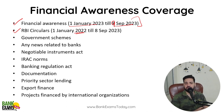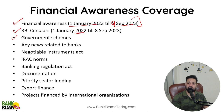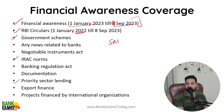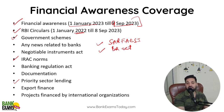Cover all government schemes: Sukanya Samriddhi Yojana, Kisan Credit Card, Jan Dhan Yojana, Vaya Vandana Yojana, and many insurance schemes. Priority Sector Lending is very important. SARFAESI Act is very important — quite a few questions come from it. Banking Regulation Act is very important. Negotiable Instruments Act is very, very important — every year 2-3 questions come from it.